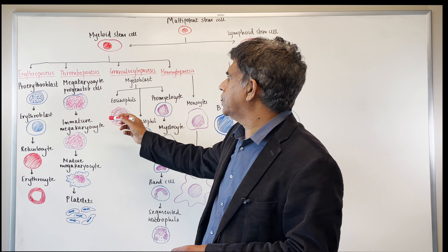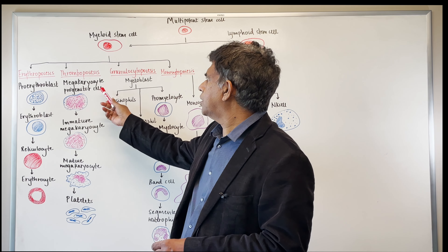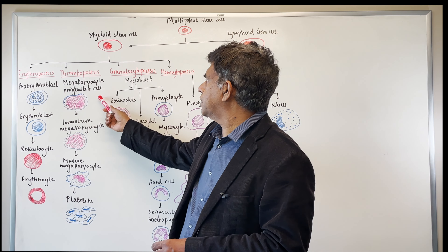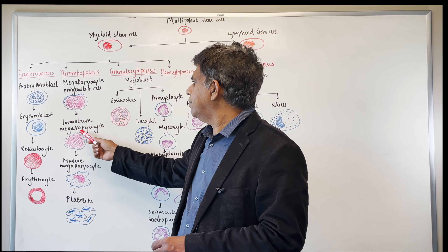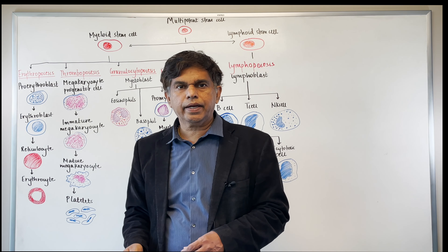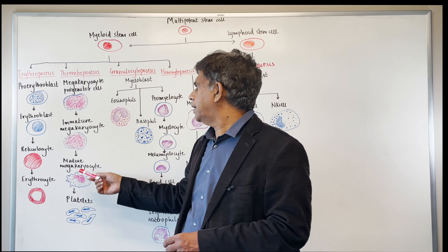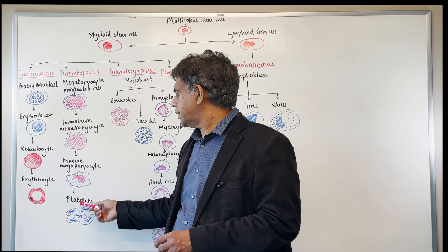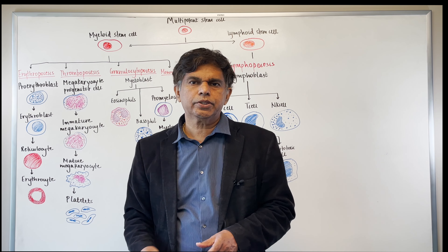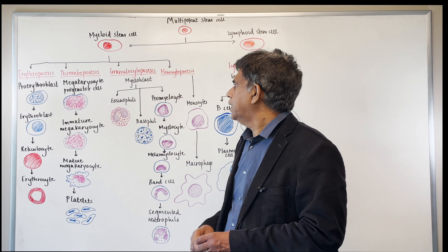Then we have thrombopoiesis. For platelet formation, you have the megakaryocyte progenitor cell, then the immature megakaryocyte, then the mature megakaryocyte, and then the formation of platelets.